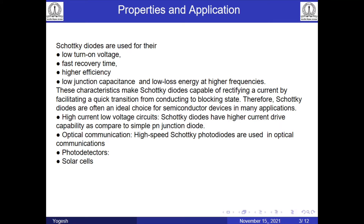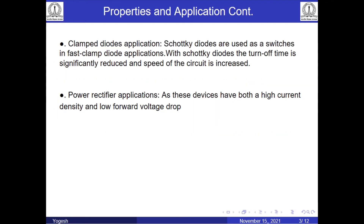Schottky diodes are used in many applications due to their low turn-on voltage and fast recovery time from being unipolar devices. They also have higher efficiency, low junction capacitance, and low power consumption. They have fast switching because they have only majority carriers and no storage time like PN junction diodes. They are used in high current low voltage circuits due to higher current drive capability, in optical communication due to higher speed, and also as photo detectors, solar cells, fast clamp diodes, and power rectifiers due to higher current density and low forward voltage drop.